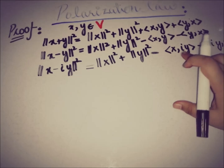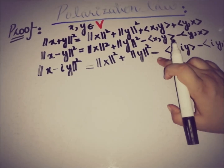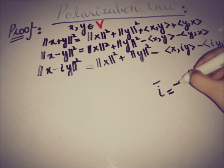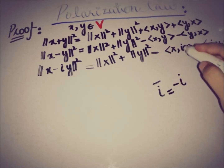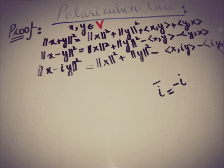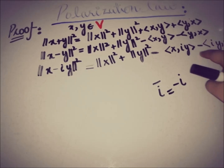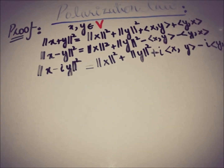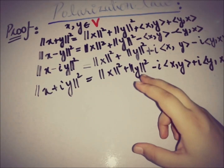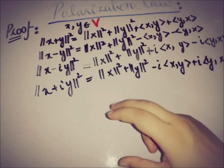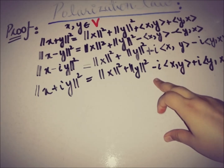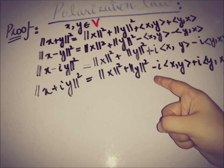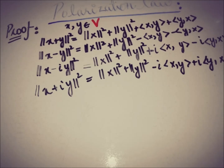When extracting iota from the second place in the inner product, we take the conjugate, so iota bar equals minus iota, changing the sign to positive. So we have plus iota times the inner product of x and y, minus iota times the inner product of y and x. Similarly, for norm of x minus iota y squared, we get norm x squared plus norm y squared, minus iota times the inner product of x and y, plus iota times the inner product of y and x. Now we have four equations to work with.